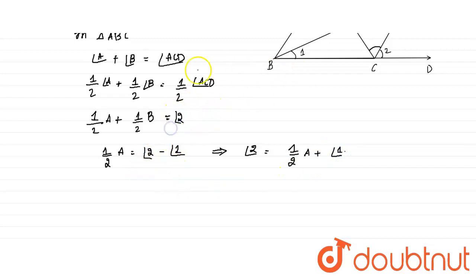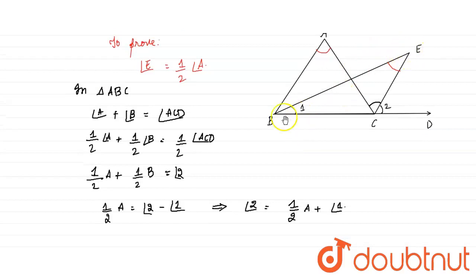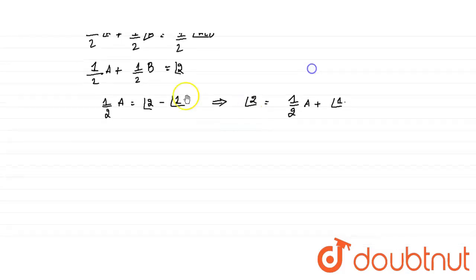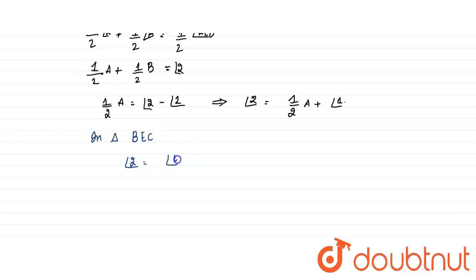Now applying the same exterior angle theorem to triangle BEC: angle 2 is the exterior angle of triangle BEC, so angle 2 equals angle E plus angle 1. This is our second equation.